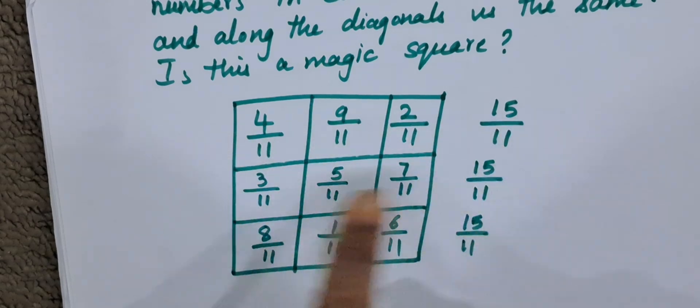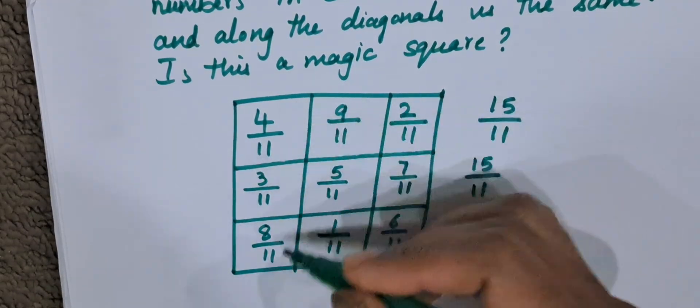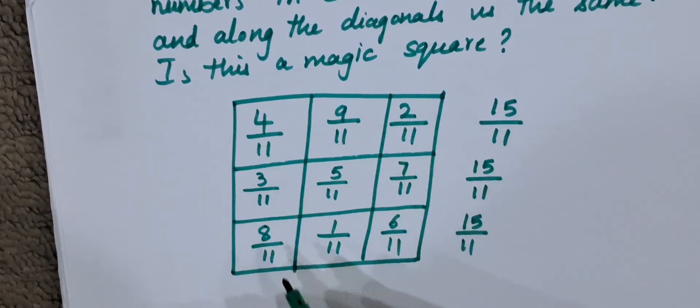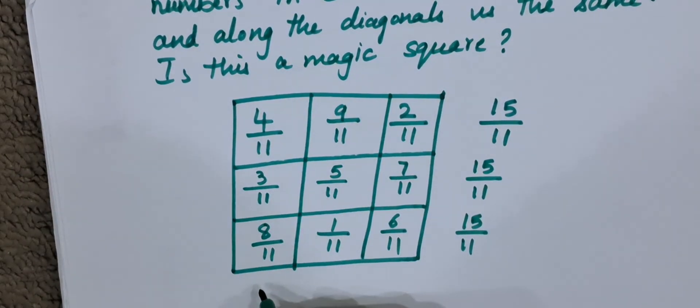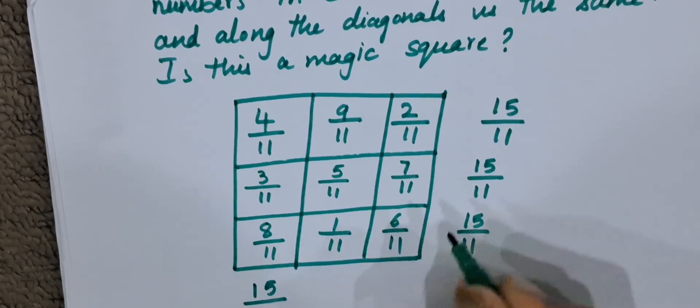The sum of all the three columns are equal. Now let us check the rows. In the first row, 4 plus 3 plus 8. 4 plus 3 is 7, 7 plus 8 is 15. So it will be 15 by 11.